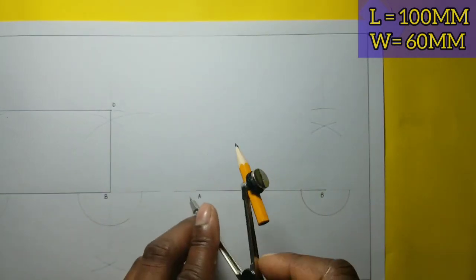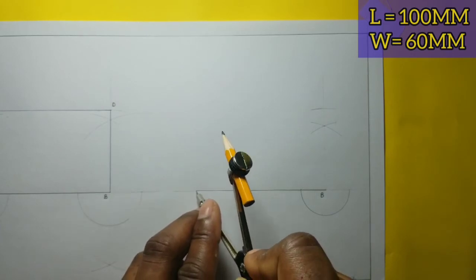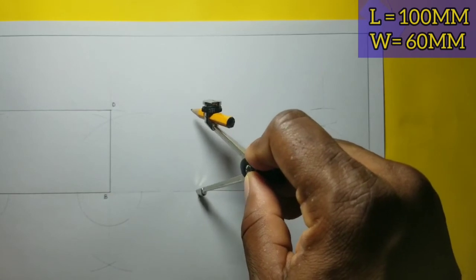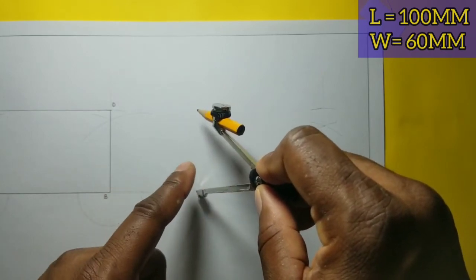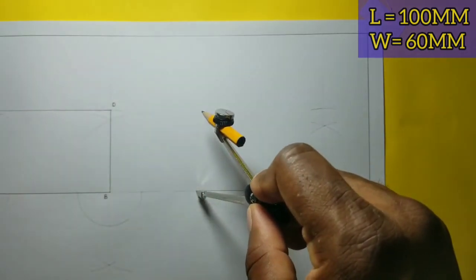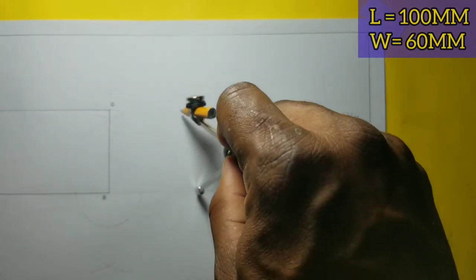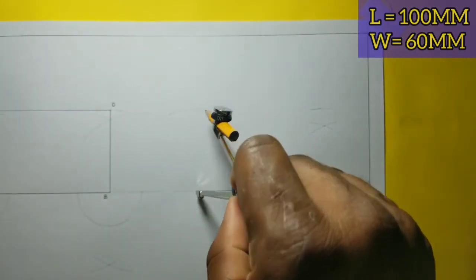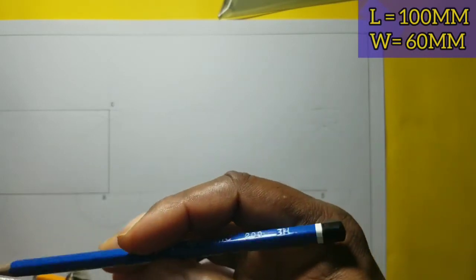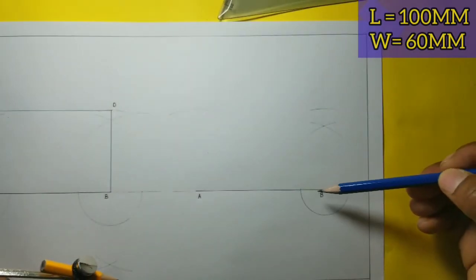I will also put my compass at point A and scribe an arc. The compass is still set to the width of this side of the rectangle, which is 60 millimeters. Before I scribe the arc over this side, I will identify my point D.